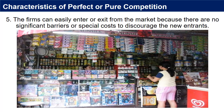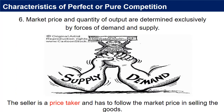5. Firms can easily enter or exit from the market because there are no significant barriers or special costs to discourage new entrants. Likewise, there are no barriers that will prevent sellers from exiting the market. Hence, firms need less capital to enter the market. 6. Market price and quantity of output are determined exclusively by forces of demand and supply. The seller is a price taker and has to follow the market price in selling the goods.